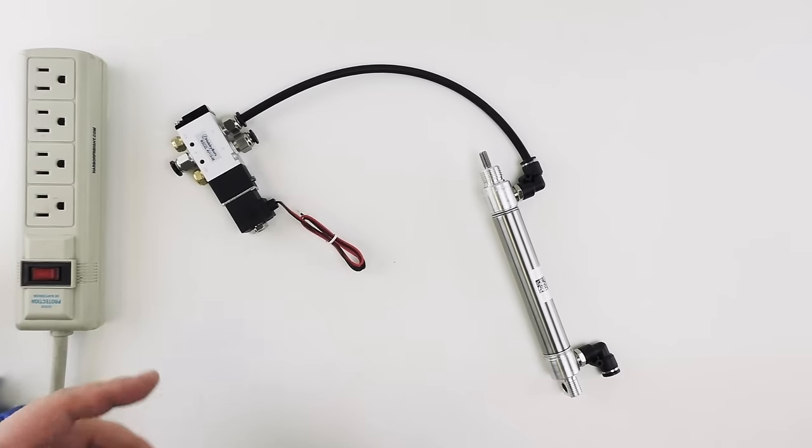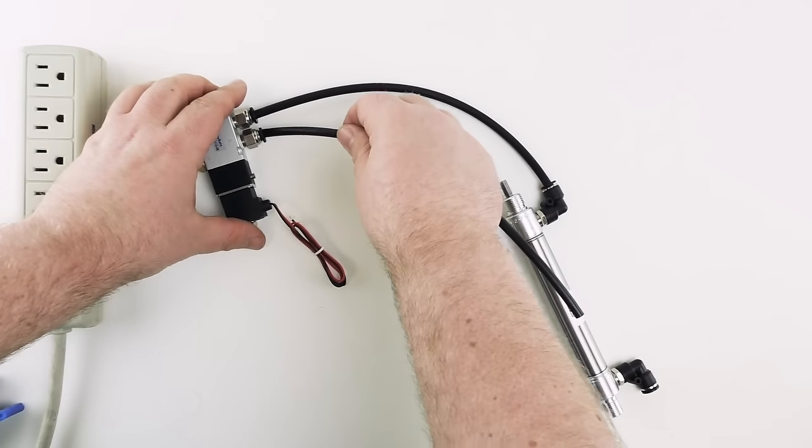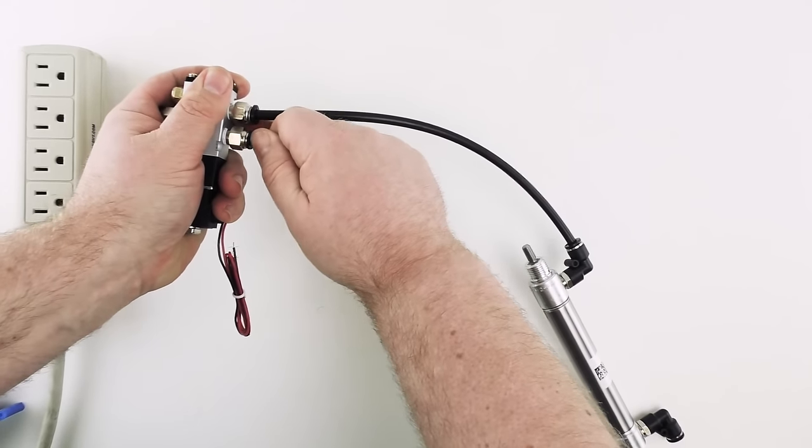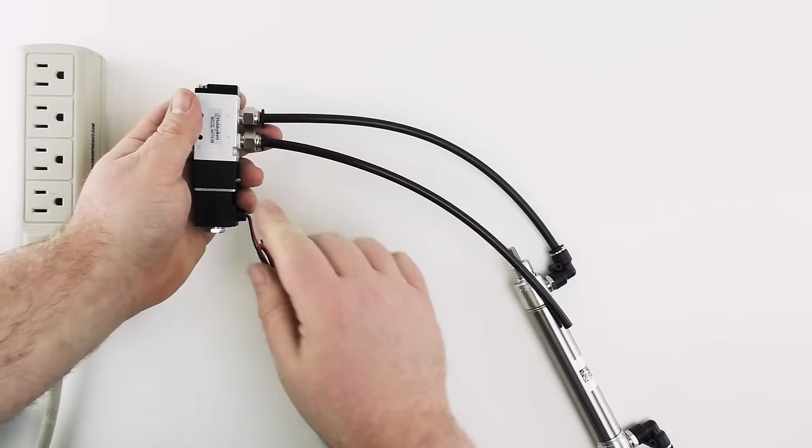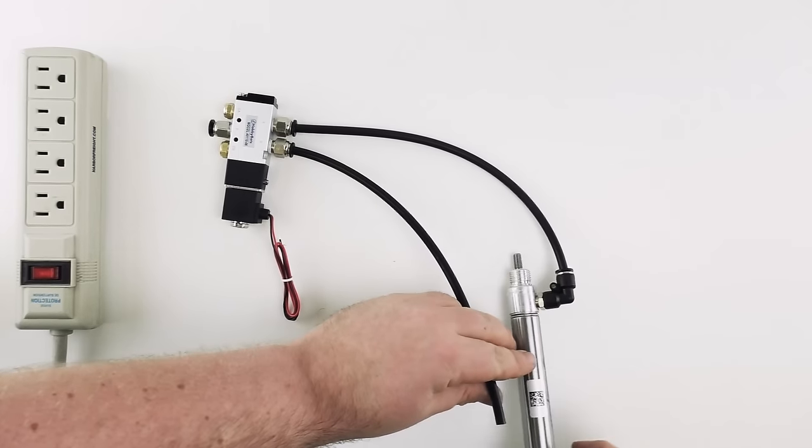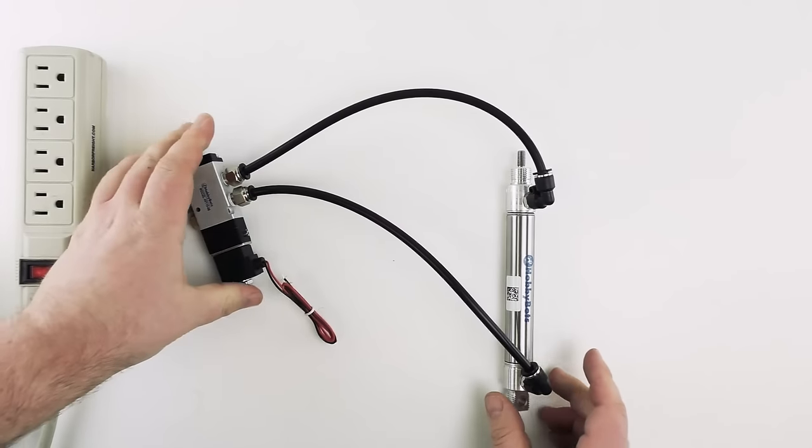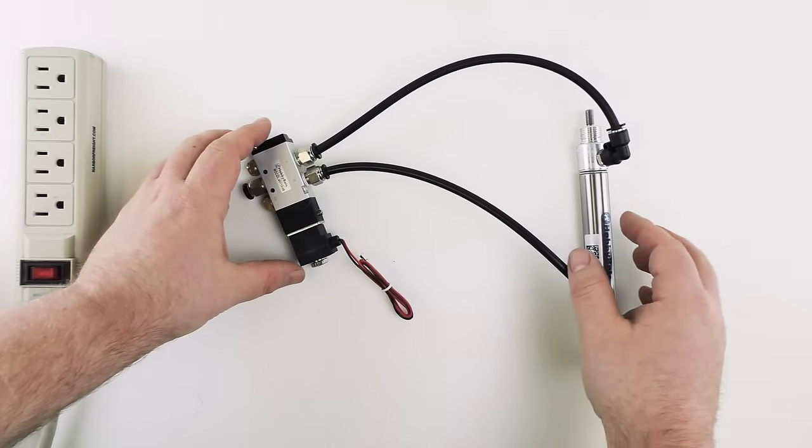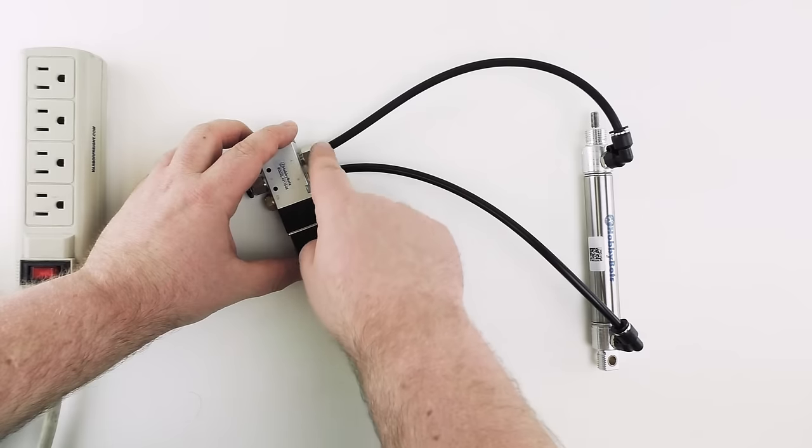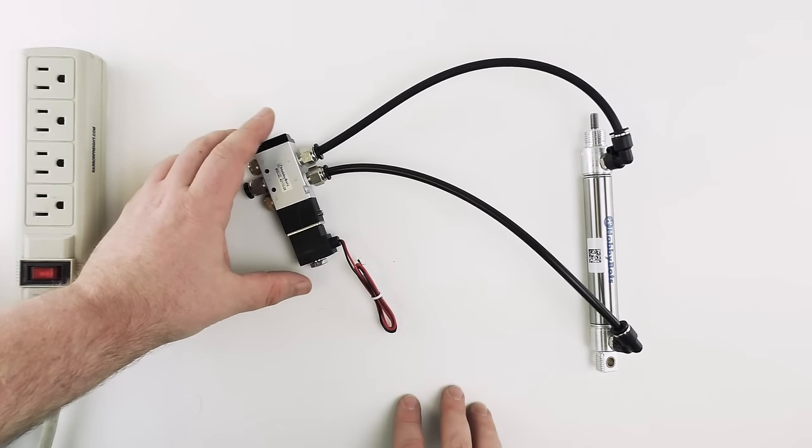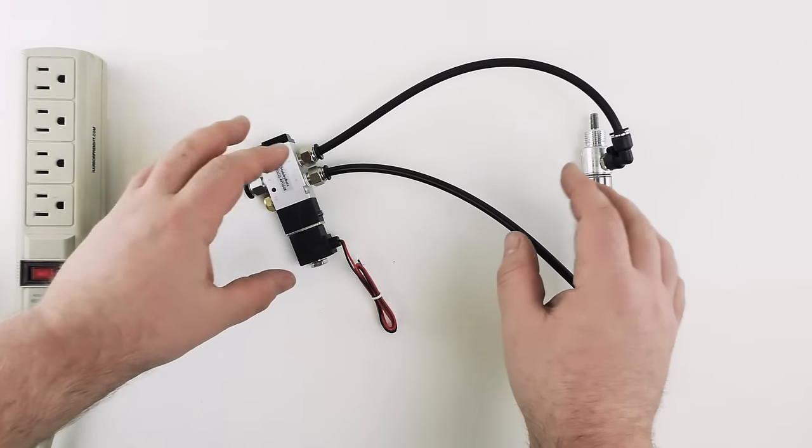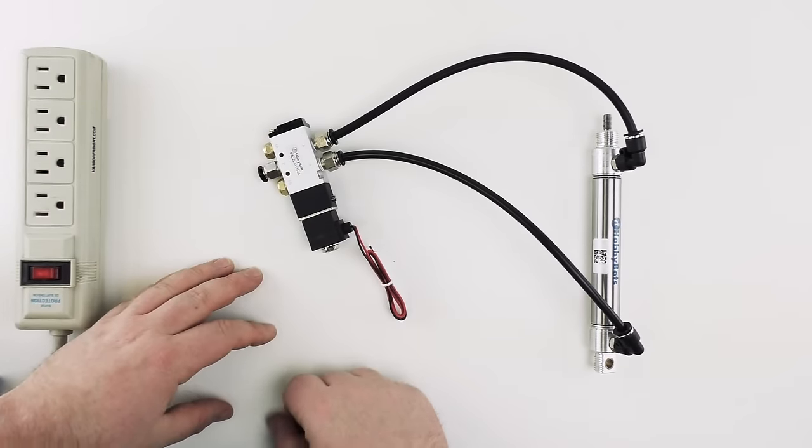Alright now we're going to go ahead and take the second piece of air line, plug that into the fitting that's coming out of port B and plug that into the bottom port of our cylinder. Alright now you can see that the solenoid has the air lines connected to the top and the bottom of the cylinder. Our next step is going to be getting air to the solenoid.